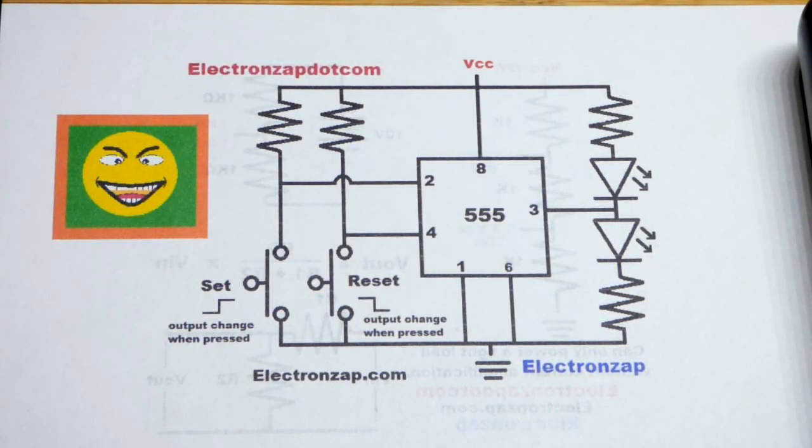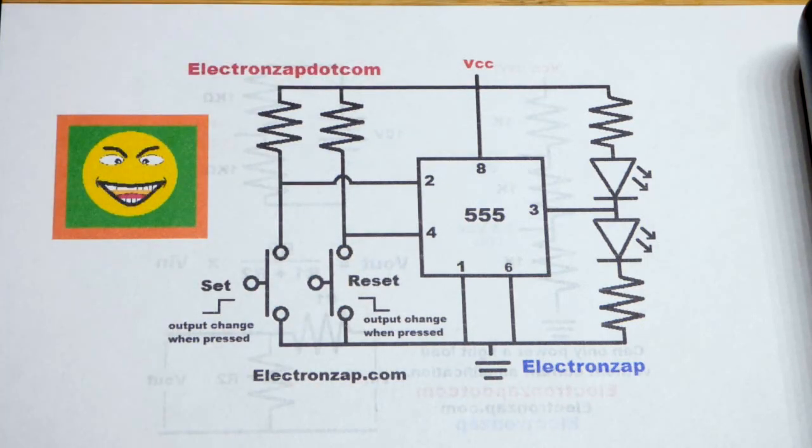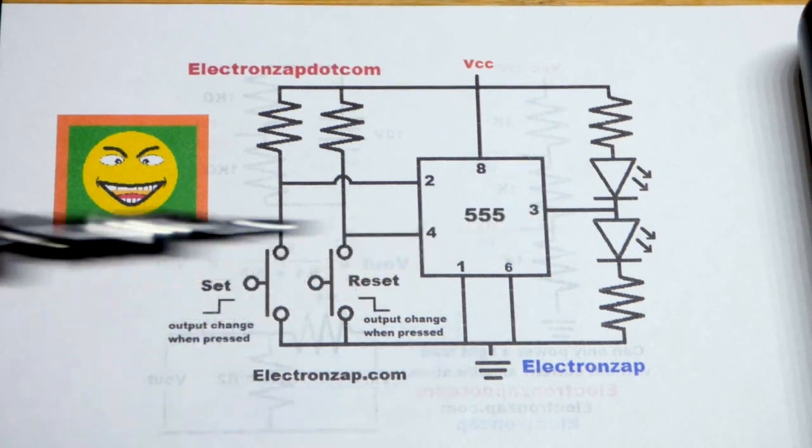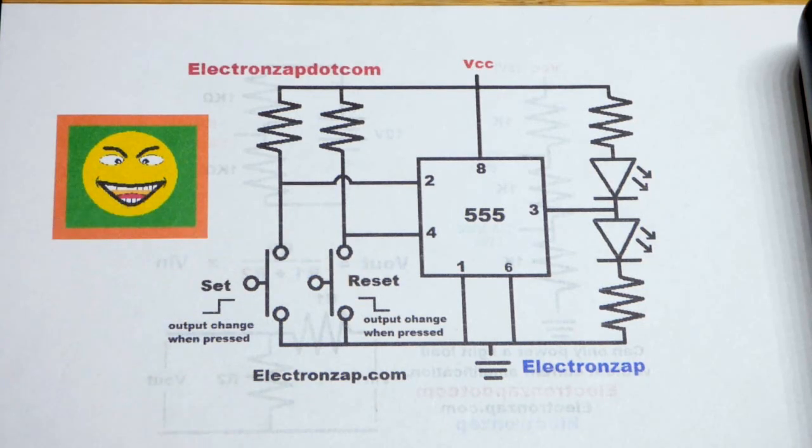So now in this video we're moving on to the 555 timer in this quick video series. I'm just going to quickly put the circuit together and briefly explain it. The output here is stable in two positions - that's what bistable means. We have to press a switch to change the output.